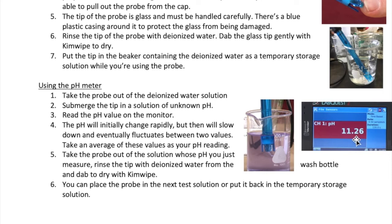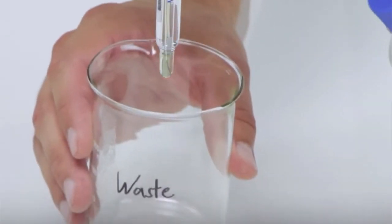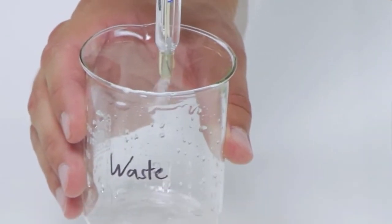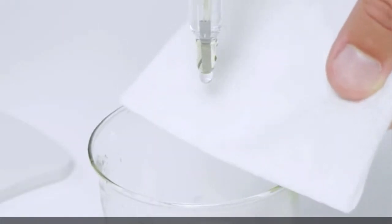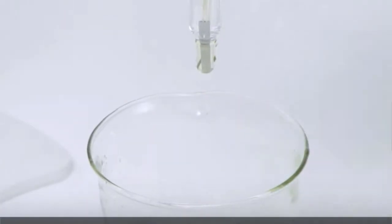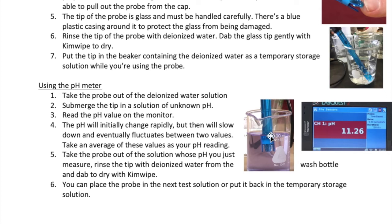Although the value will never completely stop fluctuating, it will slow down to two values and you can take an average of those values as your pH. In this example, the pH of this solution would be 11.26. Once you're done, take the probe out. Rinse its tip with deionized water from your wash bottle. Dab it dry with the kim wipe and then place it in the next solution that you want to measure the pH of.